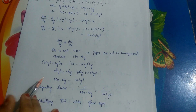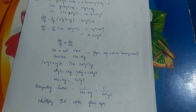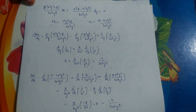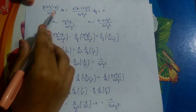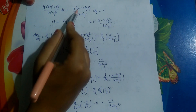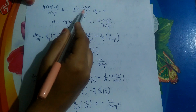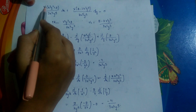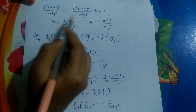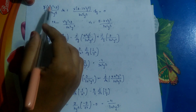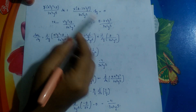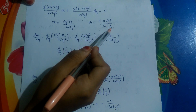Multiply the integrating factor 1/(3x³y³) throughout the equation. We get y(x²y² + 2)/(3x³y³) dx + x(2 - 2x²y²)/(3x³y³) dy = 0. Cancelling y in the first term and x in the second, M1 = (x²y² + 2)/(3x³y²) and N1 = (2 - 2x²y²)/(3x²y³).